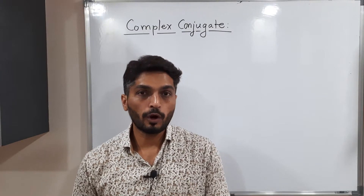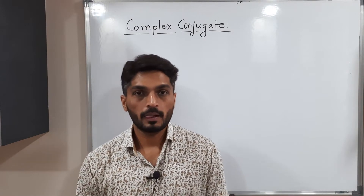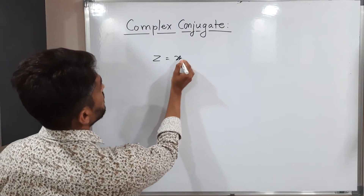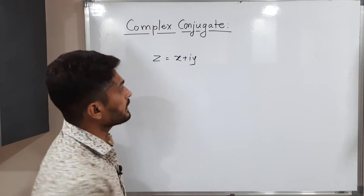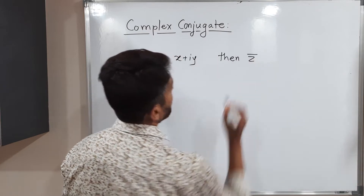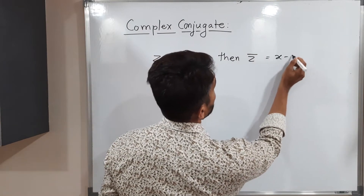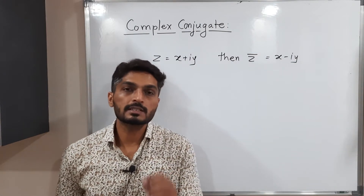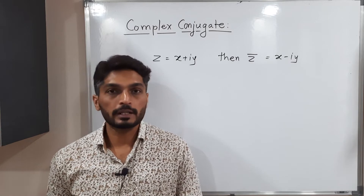Let us discuss what is complex conjugate. It's a very simple concept. You are familiar with a complex number z equal to x plus iy. Then the complex conjugate of z, denoted by z-bar, is equal to x minus iy. That means we simply have to change the sign of the imaginary part to get the complex conjugate.